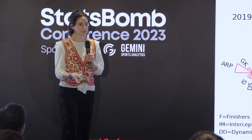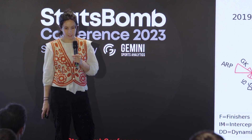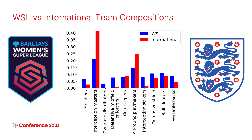Looking at team composition in this way is helpful to see what type of composition worked well for a team, but also to identify any gaps that might exist. Next, we looked at the proportion of each functional type across all WSL seasons compared to England's international teams from the 2019 and 2023 World Cups and 2022 Euros. Overall, the distribution of functions is more uniform in the WSL, but for international tournaments there are spikes at interception masters and all-round playmakers, reflecting the different nature of these tournaments.